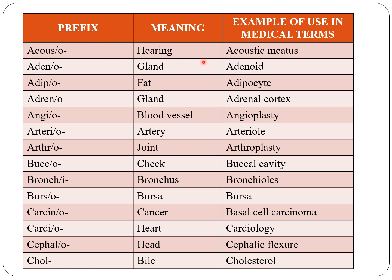Acusto indicates hearing, for example acoustic meters. Adeno indicates gland, for example adenoid. Adipo indicates fat, as in adipocyte. Adreno also indicates gland — adeno and adreno both indicate gland, as in adrenal cortex. Angio indicates blood vessel, for example angioplasty. Arterio indicates artery, for example arteriole. Arthro indicates joint, as in arthroplasty. Bucco indicates cheek, as in buccal cavity. Broncho indicates bronchus, as in bronchioles.